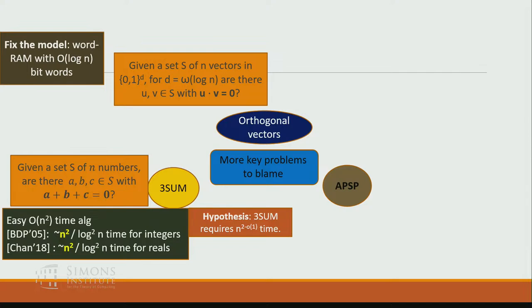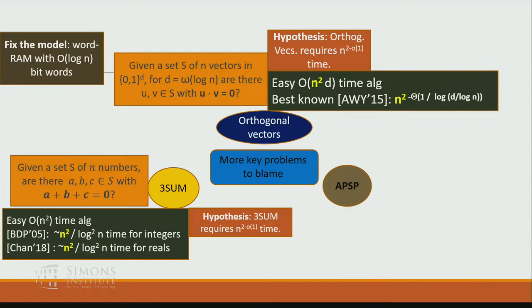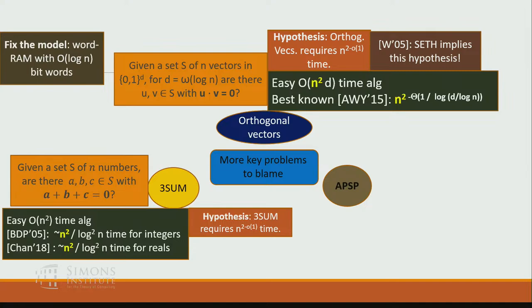In the orthogonal vector (OV) problem, we are given a set S of n vectors in dimension d for some d = Ω(log n), with 0-1 coordinates, and we want to decide whether there are two vectors that are orthogonal. The brute force algorithm runs in O(n²·d) time. The current best known upper bound is n^(2−Θ(1/log(d/log n))). When d = Ω(log n), this is n^(2−Θ(1)) — still not polynomially better than n². The OV hypothesis states this problem requires n^(2−Θ(1)) time, and it's known that SETH implies this hypothesis.